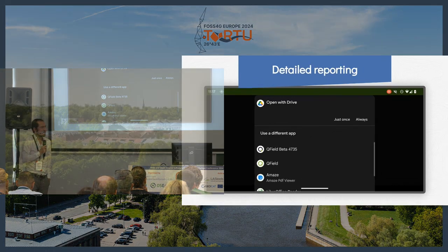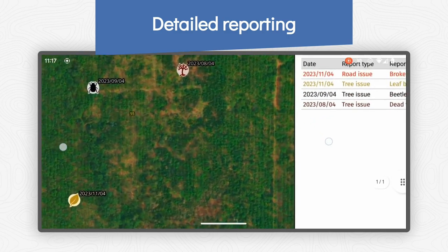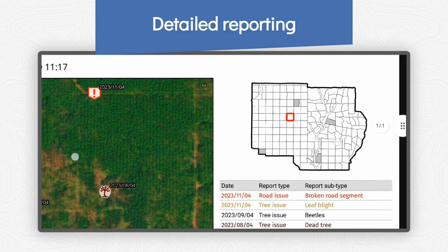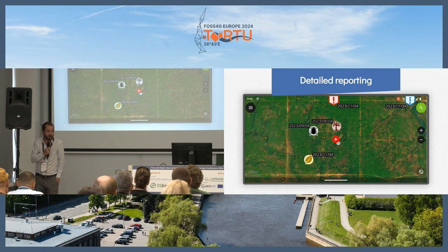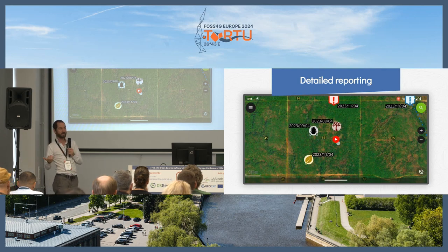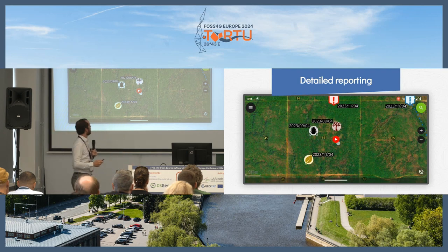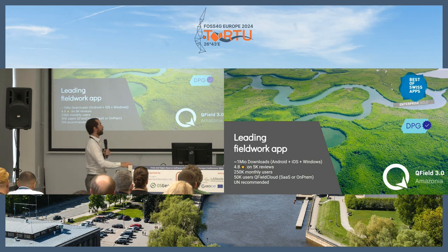Obviously, as GIS experts, we love data. But users and decision makers often don't directly want data — instead they like to have reports. So Dennis needed to send the mayor of the city a report, and he could use a QGIS print layout to prepare everything, then collect the data and directly with the live collected data prepare a PDF in the field and send it by mail to the mayor, which he obviously found really nice.